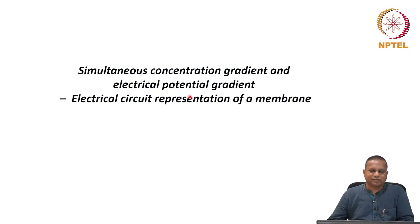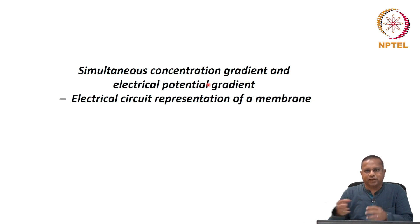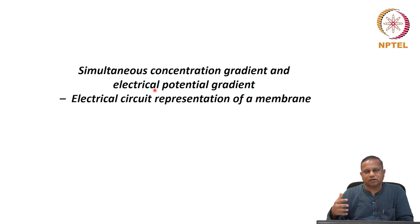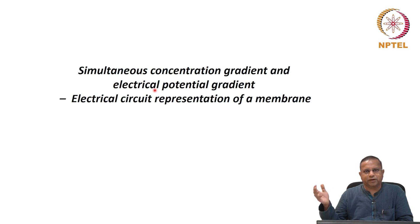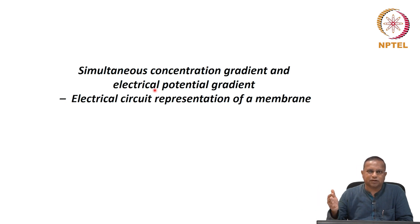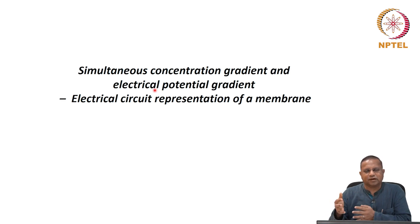Welcome. Let us continue our discussion on simultaneous concentration gradient and electrical potential gradient — essentially mass flux under the action of these two simultaneous gradients. In the previous classes, we looked at the movement of ions under these conditions in a liquid and then across a membrane. We looked at the Nernst equation, applied the Nernst equation, and then looked at the condition of Donnan equilibrium with an approximation to the movement described by the Nernst equation.